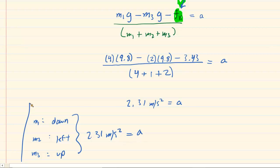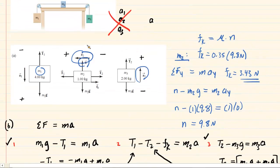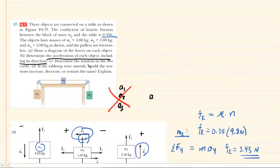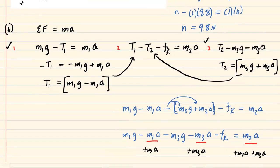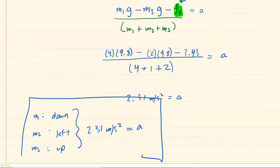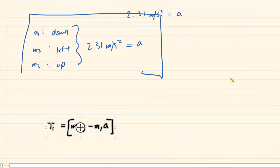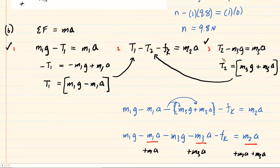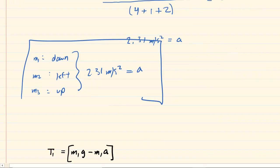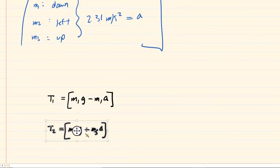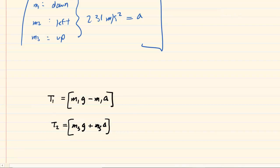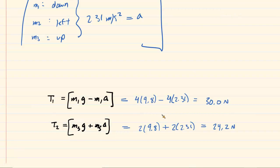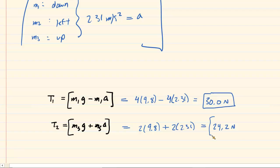Part C asks us to determine the tensions T1 and T2 in the two cords. Since we already solved for T1 and T2 algebraically, we simply plug in the known masses and the acceleration of 2.31 m/s². The results are T1 approximately equals 30 N, and T2 equals 24.2 N.